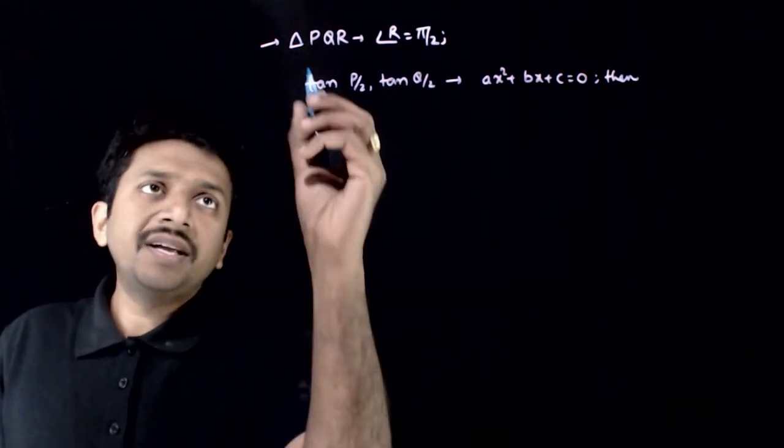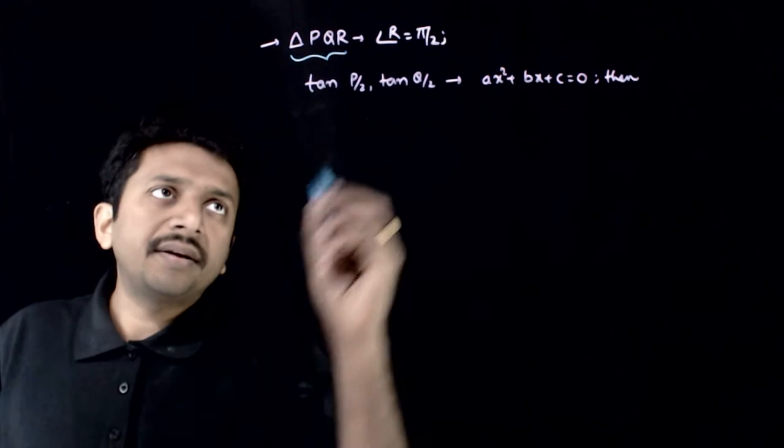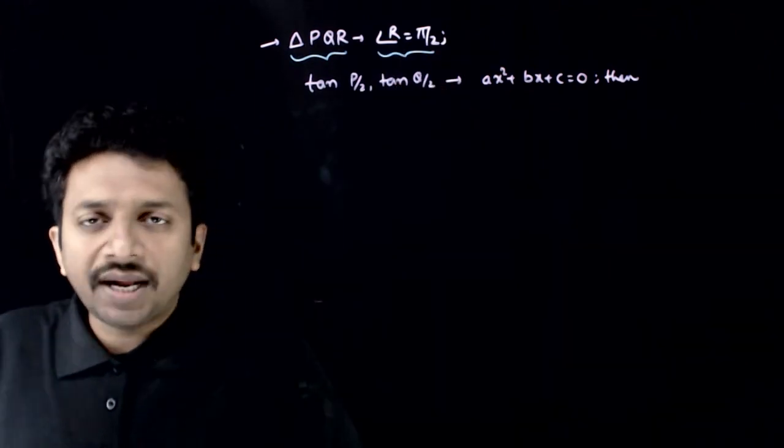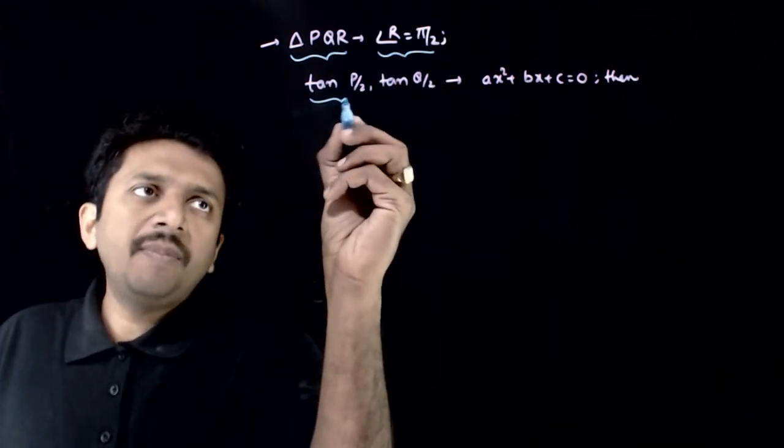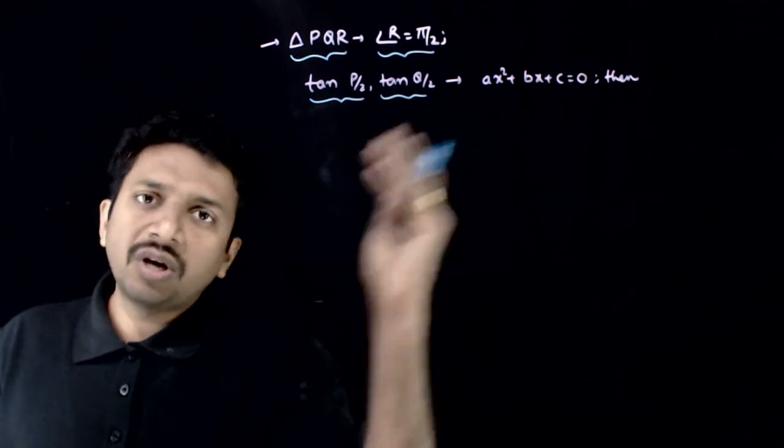Welcome students. This question is given that in a triangle PQR, angle R is equal to 90 degrees and tan P by 2 and tan Q by 2 are the roots of ABC.